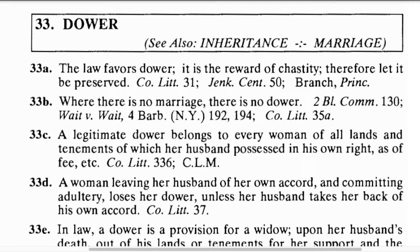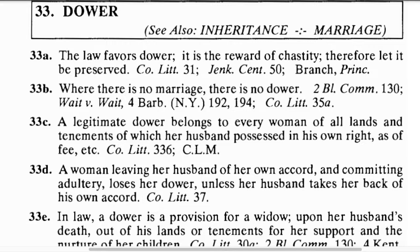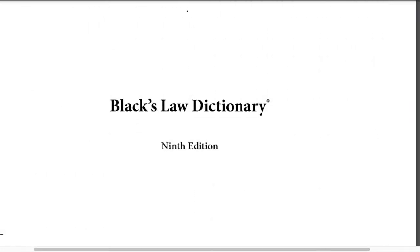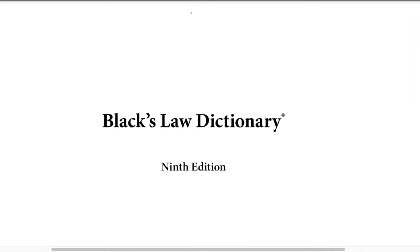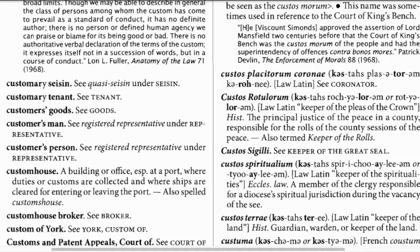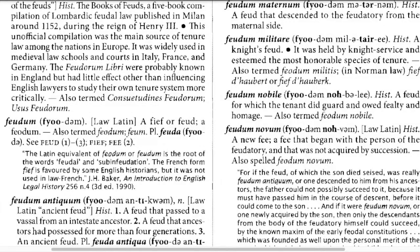Now we get to dower — see also inheritance and marriage. 'The law favors dower; it is the reward of chastity, therefore let it be preserved.' We need to go over dower through Black's Law because this is more of an archaic term today. Bear with me as we go through this scanned document that I can't search easily — it seems quicker to scroll through and hope for the best.